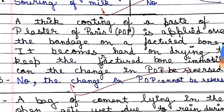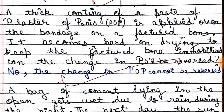Next question: a thick coating of plaster of paris is applied over the bandage on a fractured bone. When someone's bone is fractured, plaster of paris is applied — it is white and becomes very hard on drying to keep the fractured bone immobile. Can the change of plaster of paris be reversed? No, the change in plaster of paris cannot be reversed — once it hardens, it cannot go back to its original form.